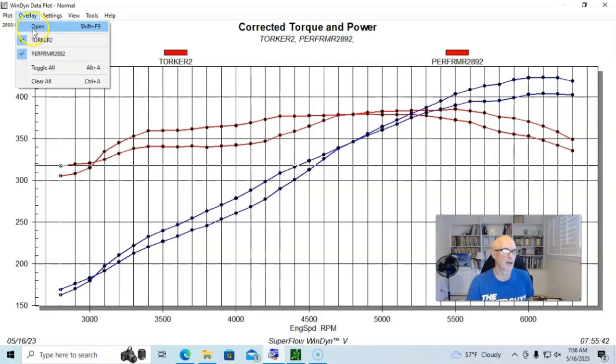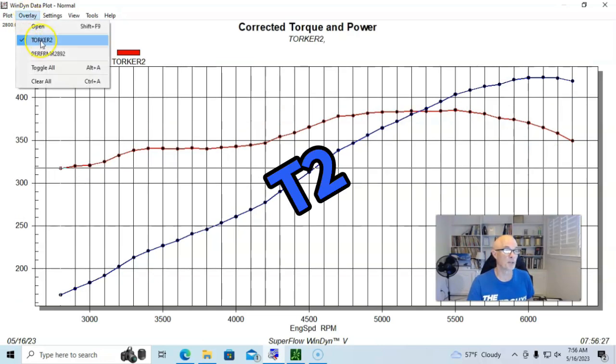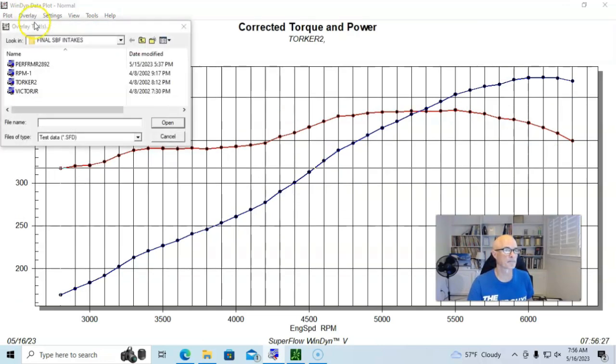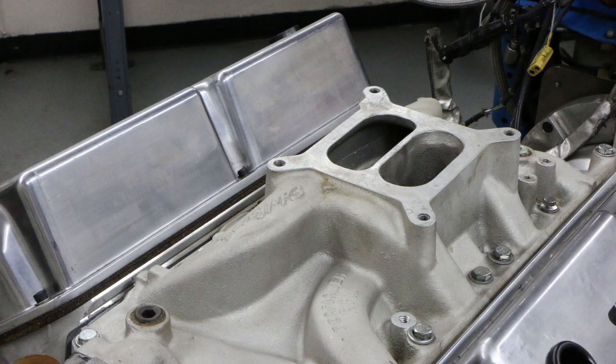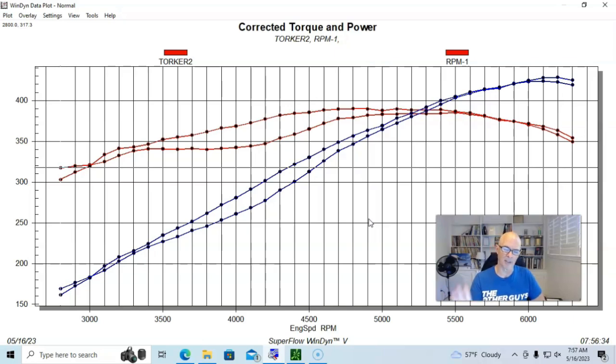We're going to compare the Torker 2 now to the Performer RPM. You can see that there's even less of a trade-off between the two. On the RPM versus the Torker 2, basically the RPM does everything that the Torker 2 does, doesn't lose anything at the top except maybe out past 6100 RPM, but basically it's as good or better through all of the rest of the curve. So if you were choosing an intake manifold for this combination, for something that had this kind of cam and was making this kind of power in this RPM range, it would be really hard to beat an RPM or an RPM Air Gap.